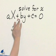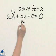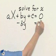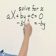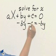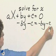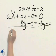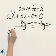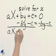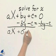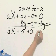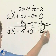How can I get rid of add? Subtract from both sides. ax + 0 + 0 = -by - c.